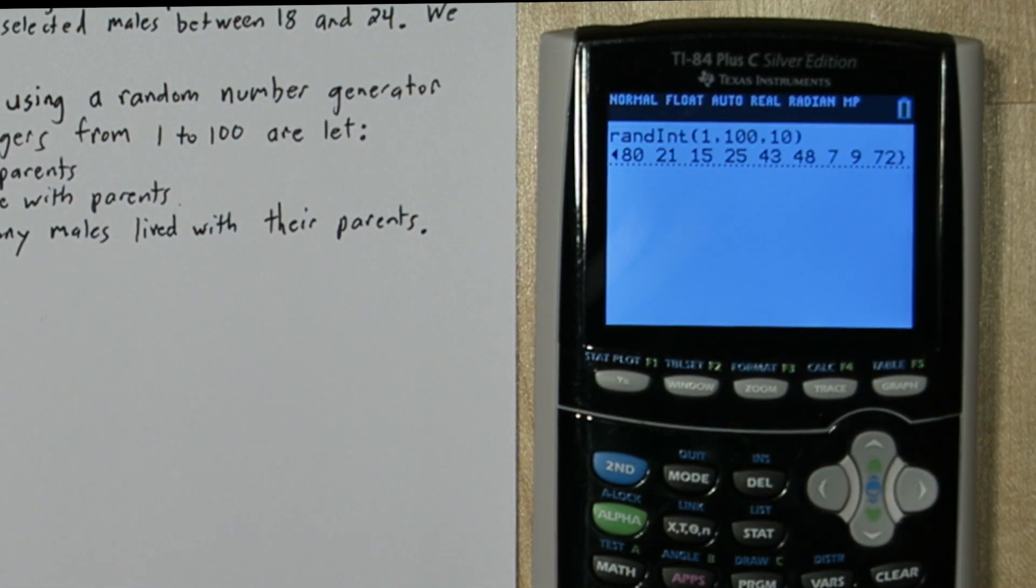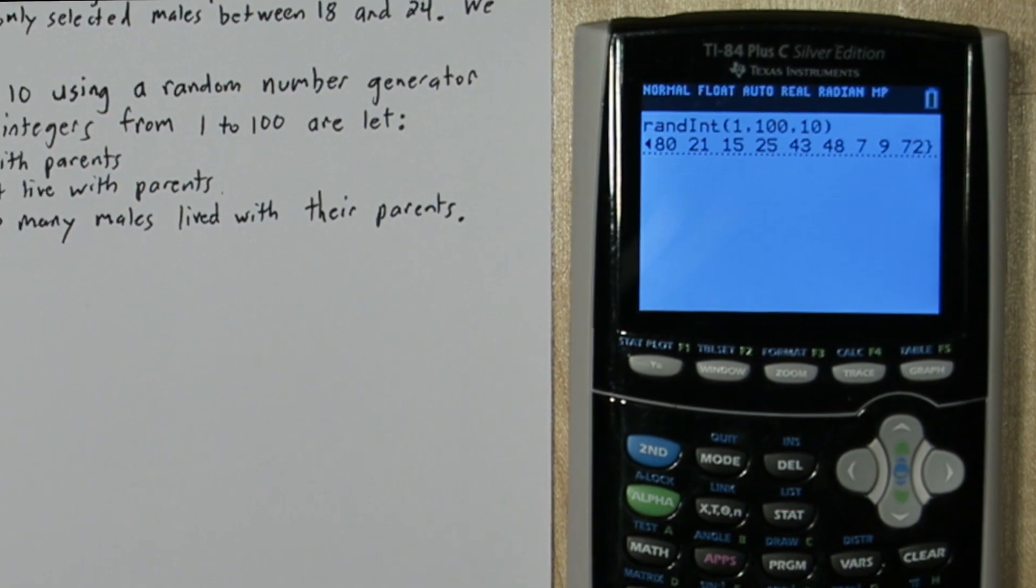So 8 of our 10 numbers were between 1 and 59. So this simulation represents a random sample of 10 males where 8 still lived with their parents. Now we need to do this a lot of times. We call it doing many repetitions of our simulation. So let's set up a table to organize our data.